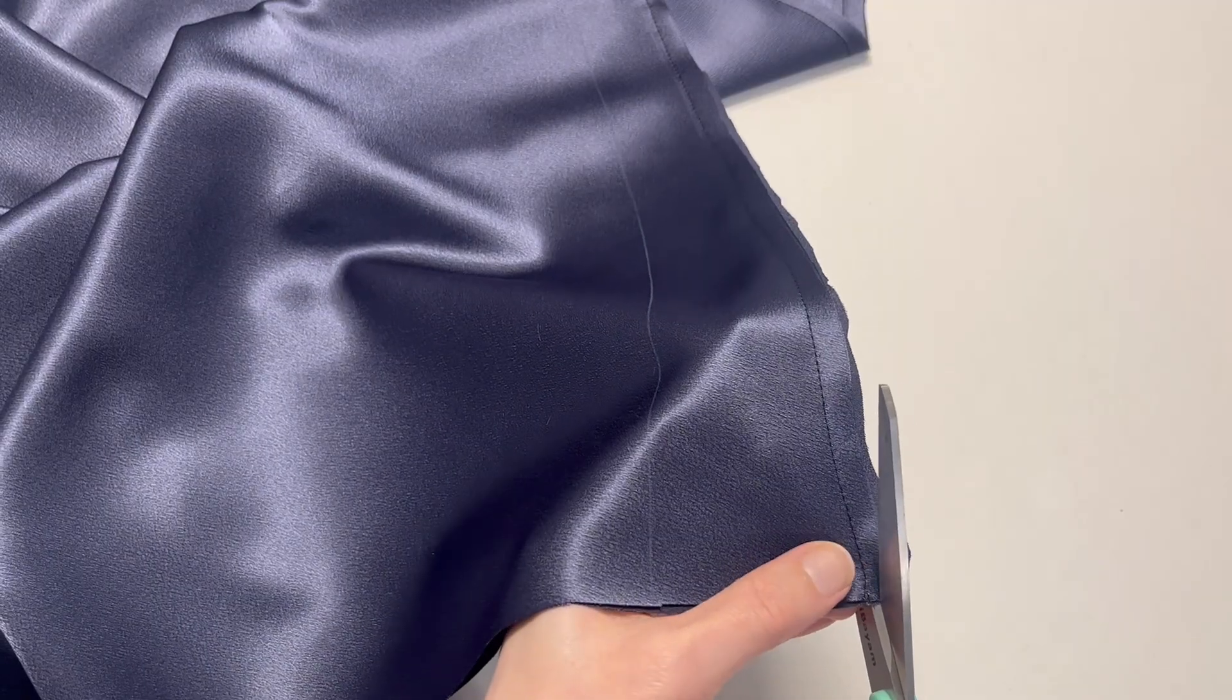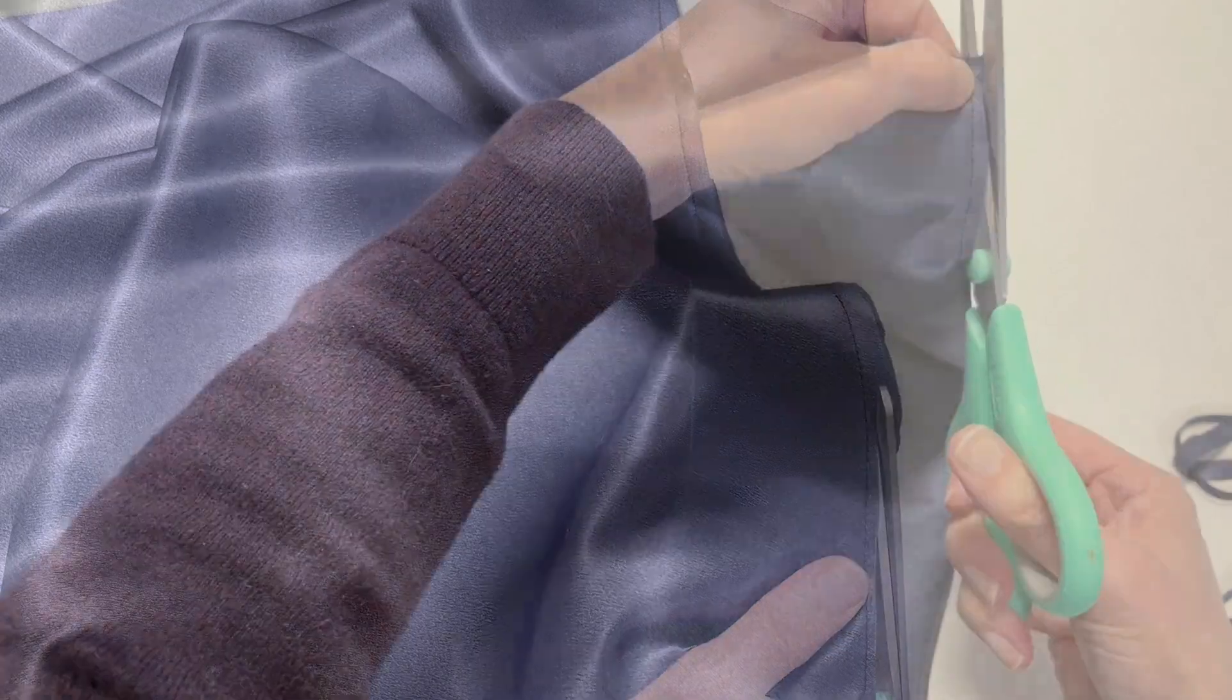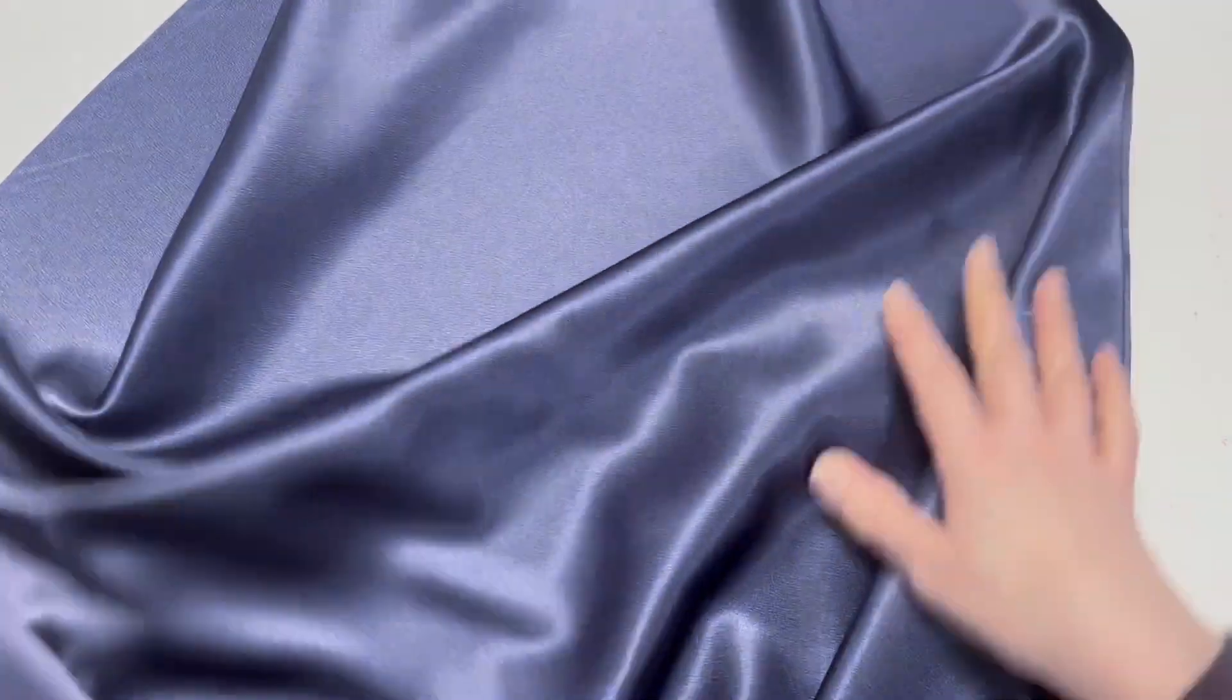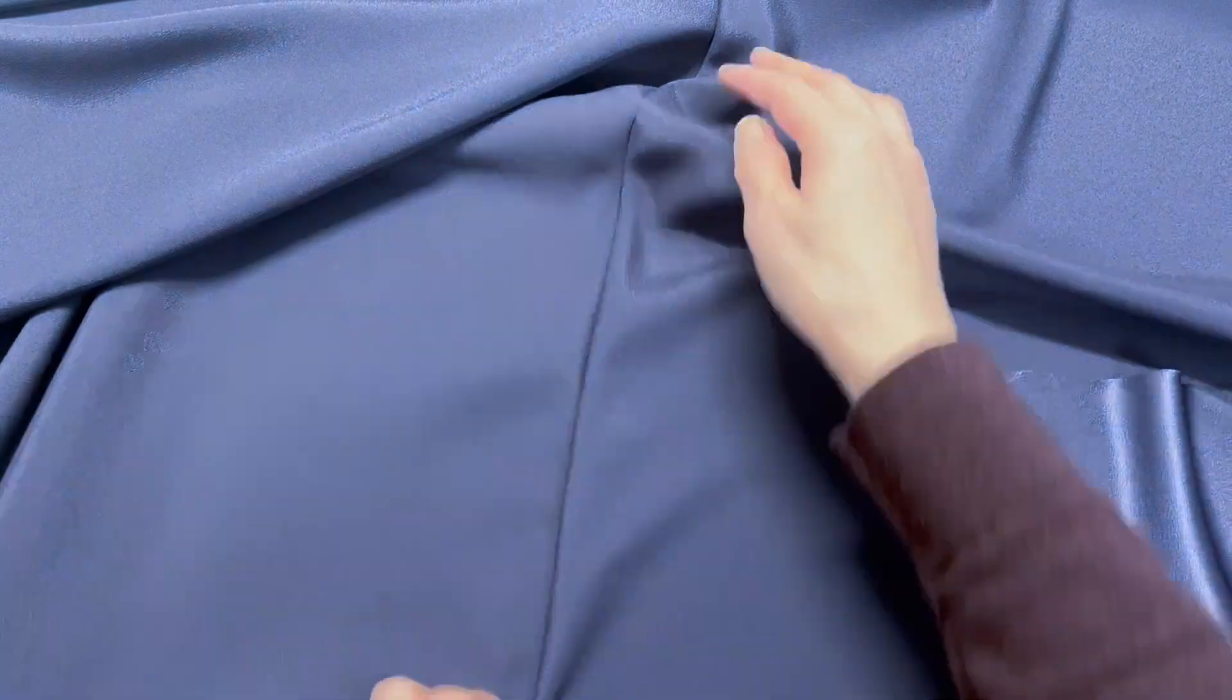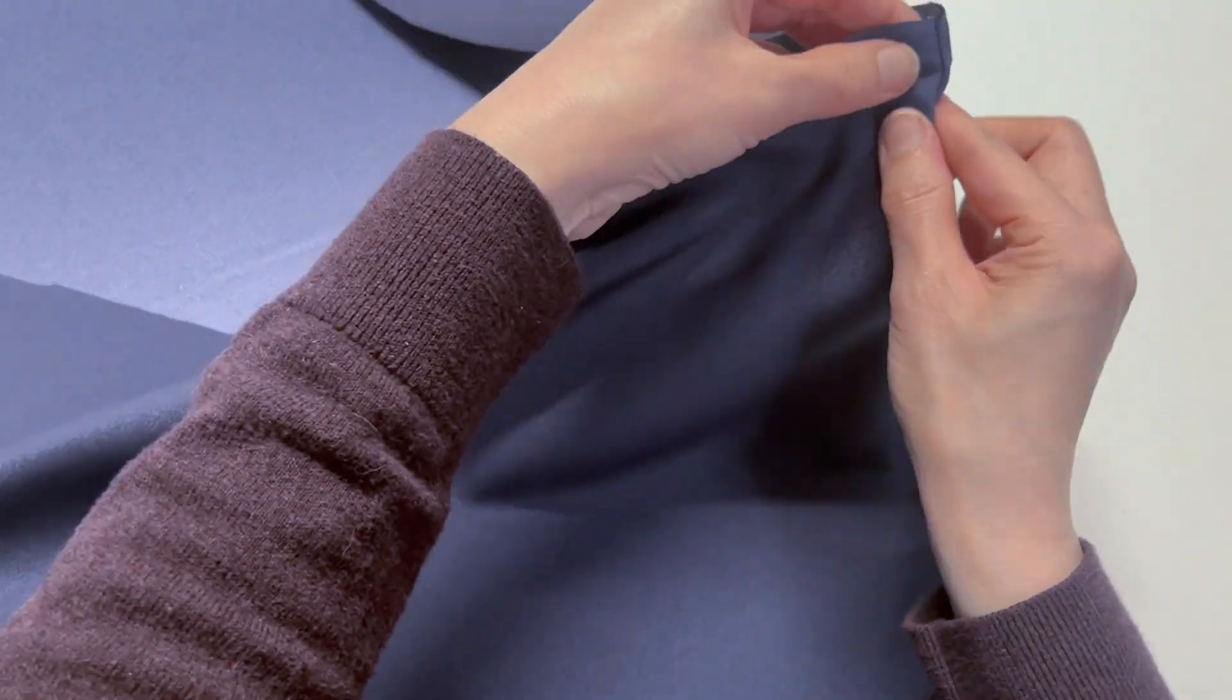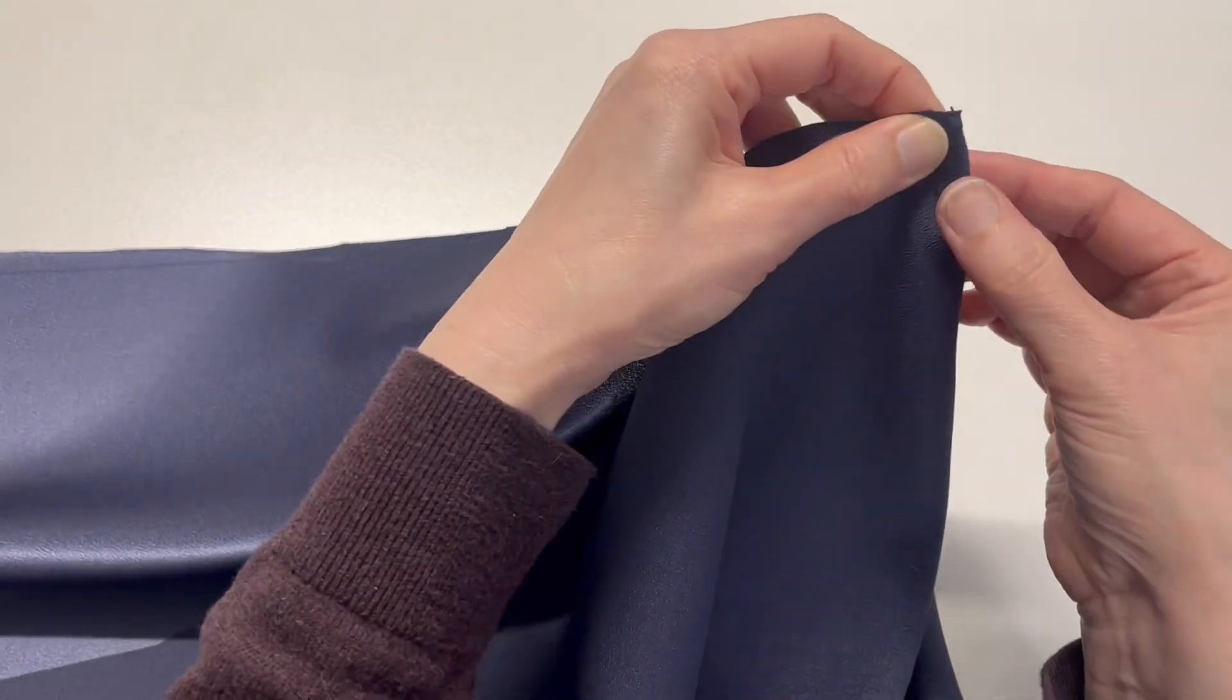Cut the seam allowance leaving about 1 1⁄8 inches. Turn it over. Sew with a 1⁄4 inch seam allowance again.